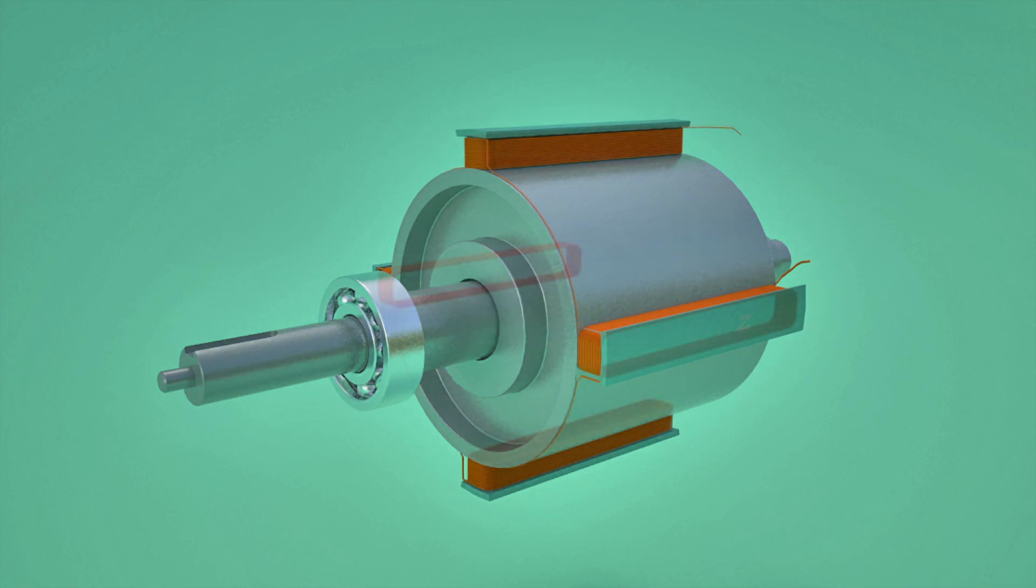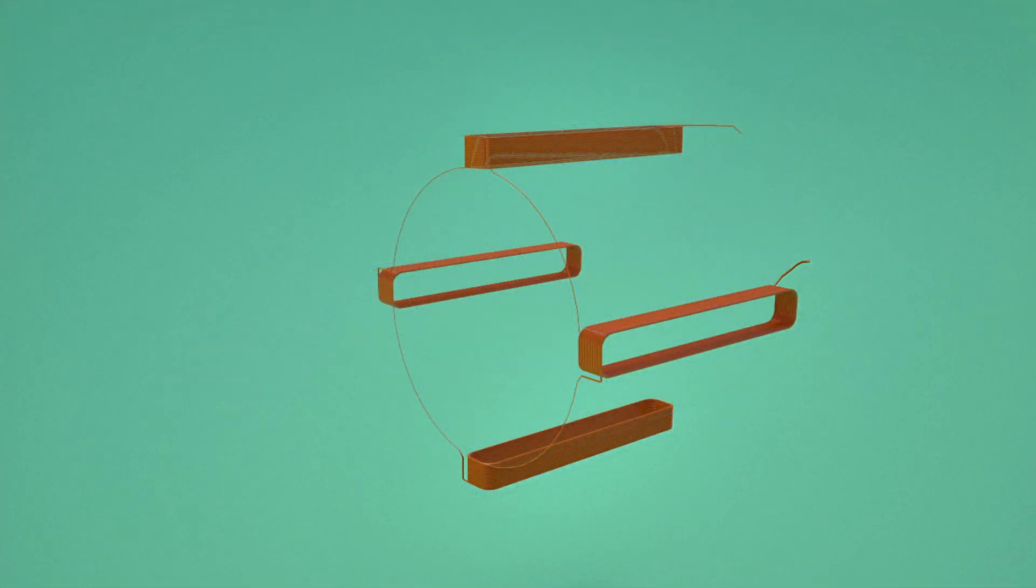This kind of rotor is known as a salient pole rotor. For better insight into its working, let's consider a rotor with just four poles.